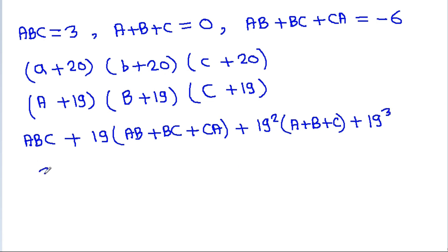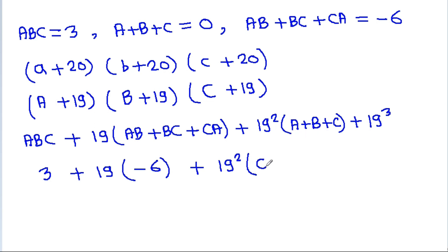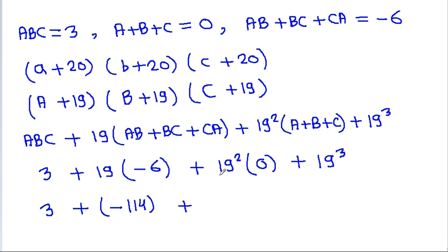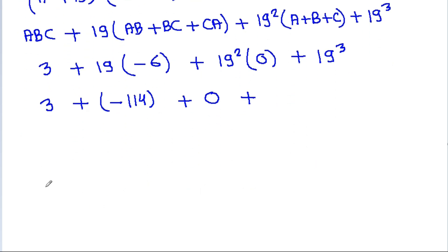Expanding (a+20)(b+20)(c+20) gives: abc plus 19 times (ab+bc+ca) plus 19 squared times (a+b+c) plus 19 cubed. Substituting: 3 plus 19 times (minus 6) plus 19 squared times 0 plus 19 cubed.